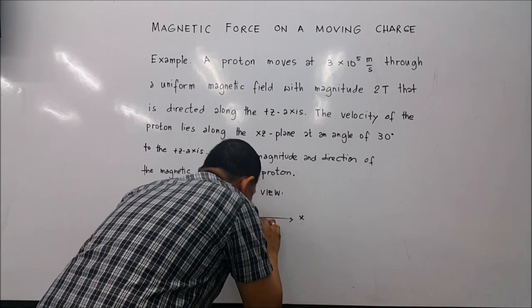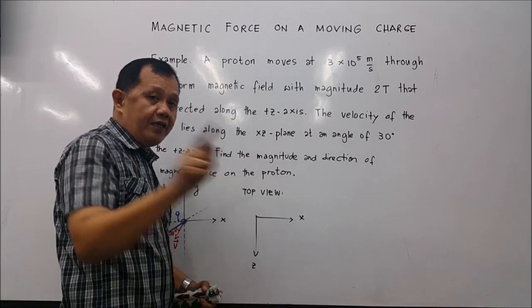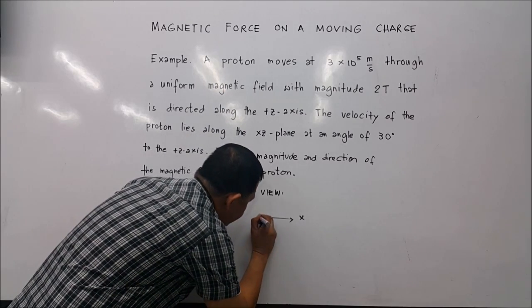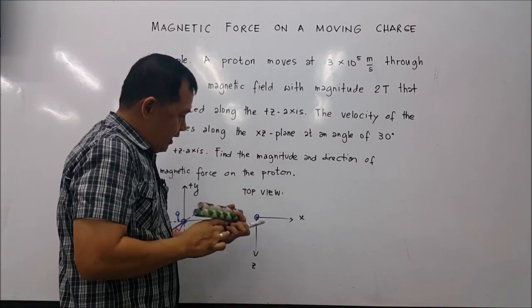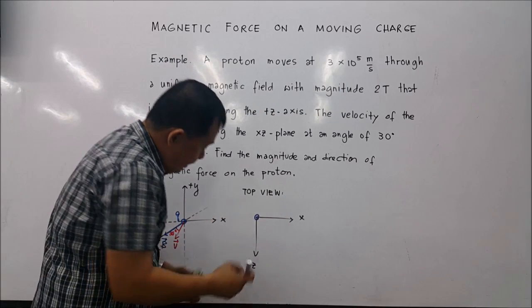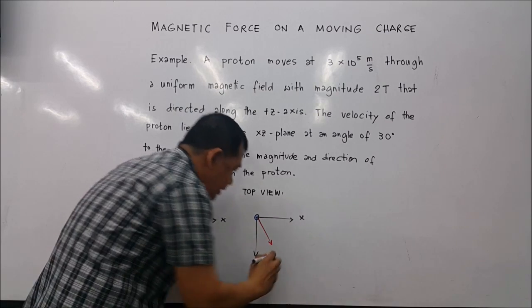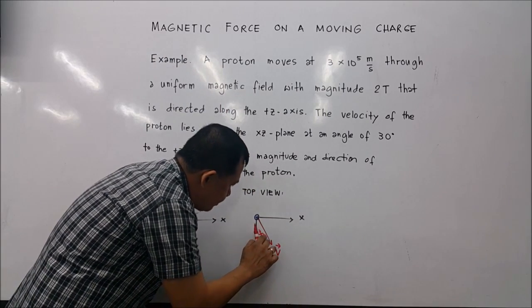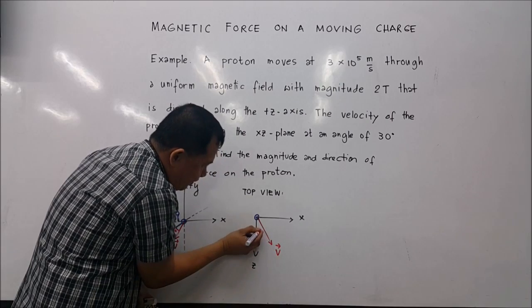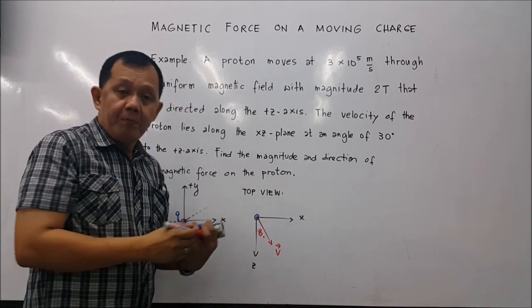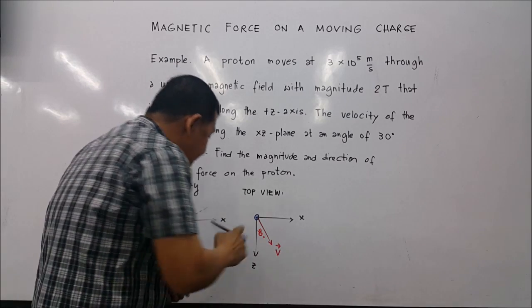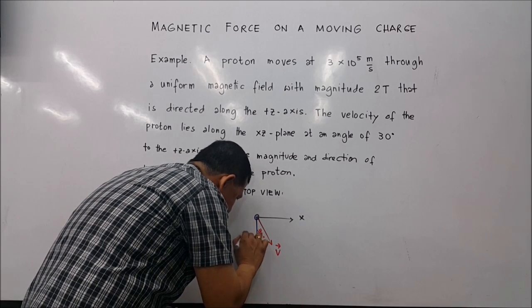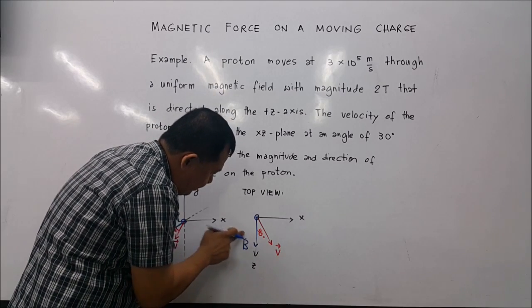So this is x, and this is z, and y is directed out of the board. The proton is here, and the velocity lies along the x-z plane at an angle of 30 degrees with the positive z. The magnetic field is directed along positive z.